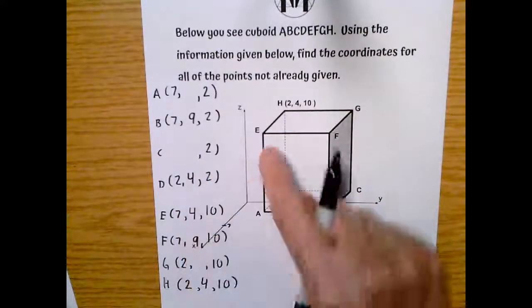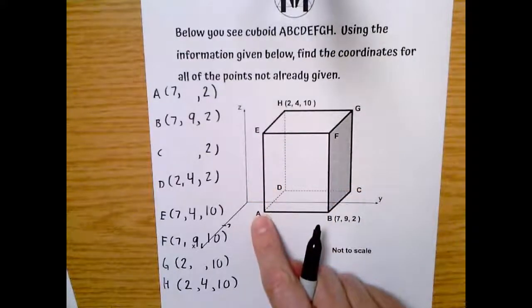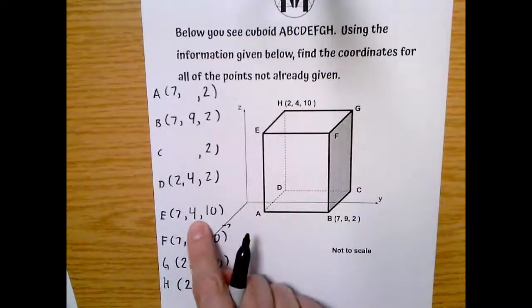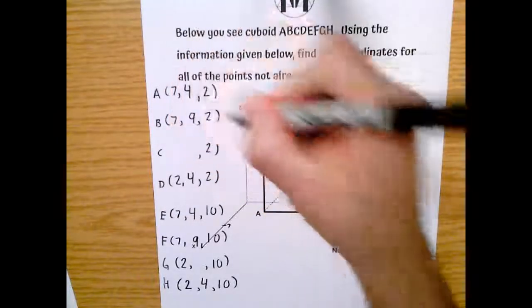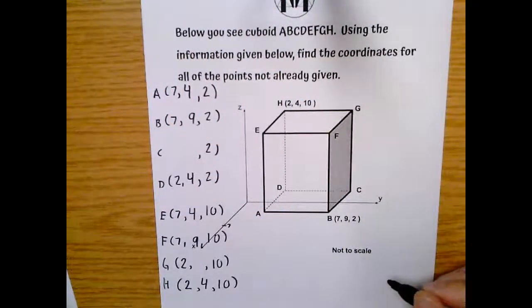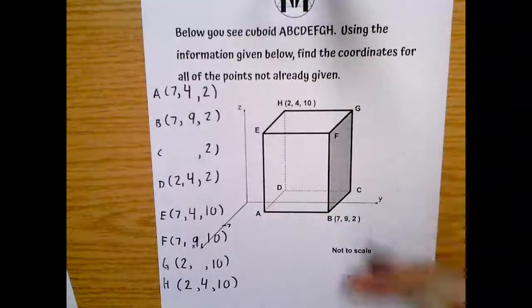Now, lucky for us, E is directly above A. So if E has a Y value of 4, then A has a Y value of 4. And this is the idea. We just go around and build and build and build.